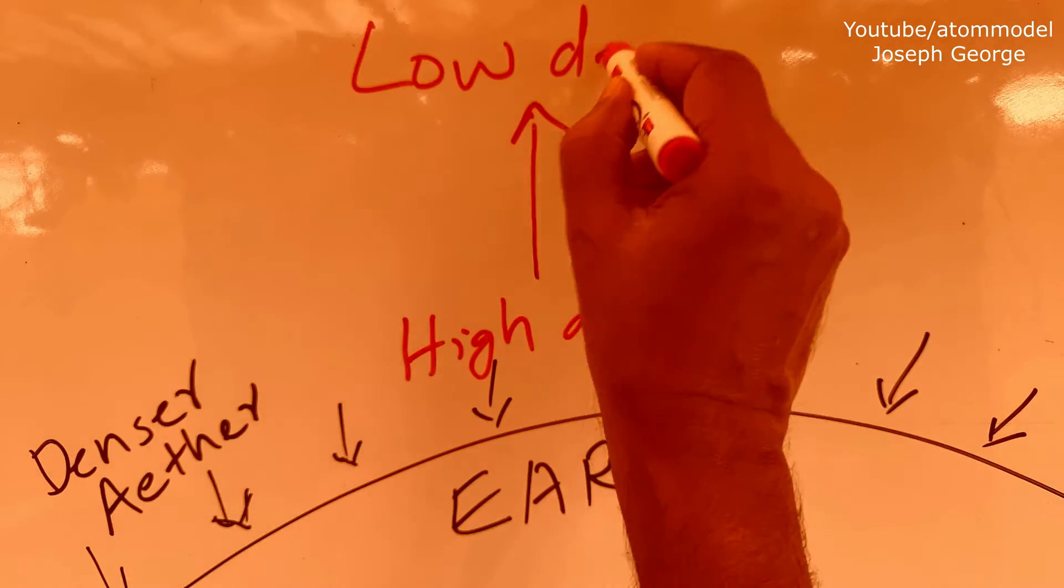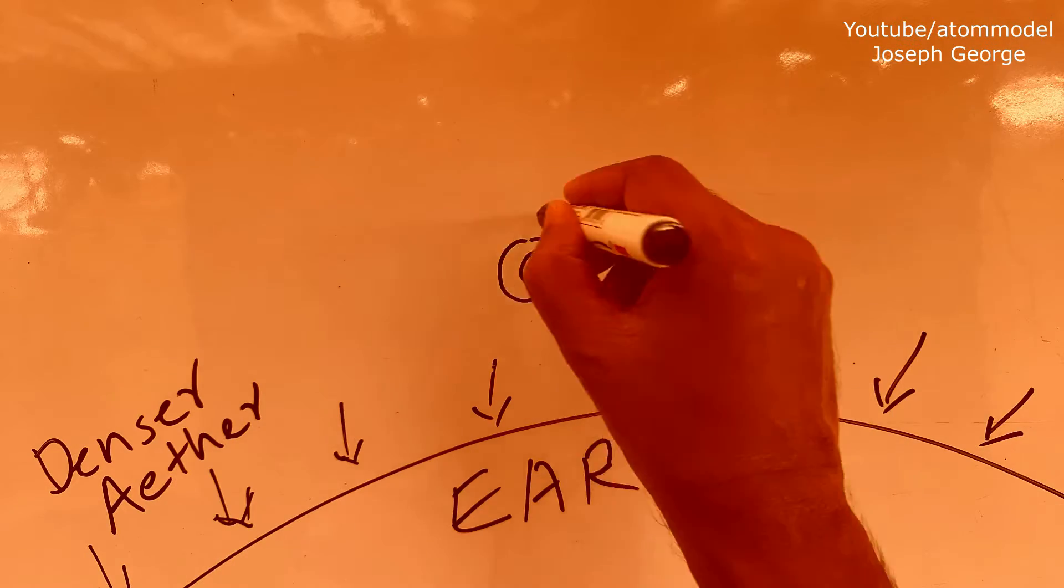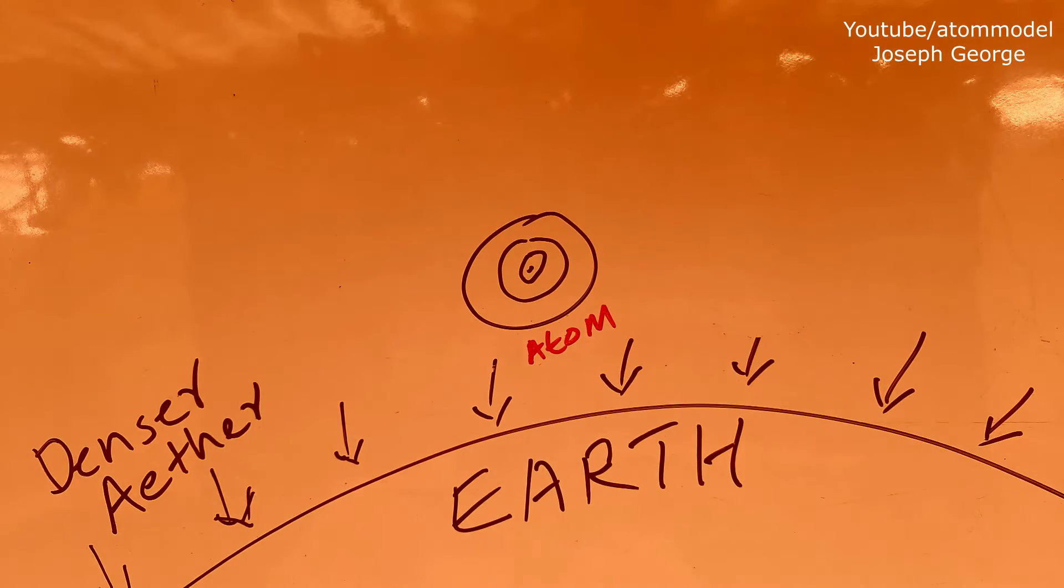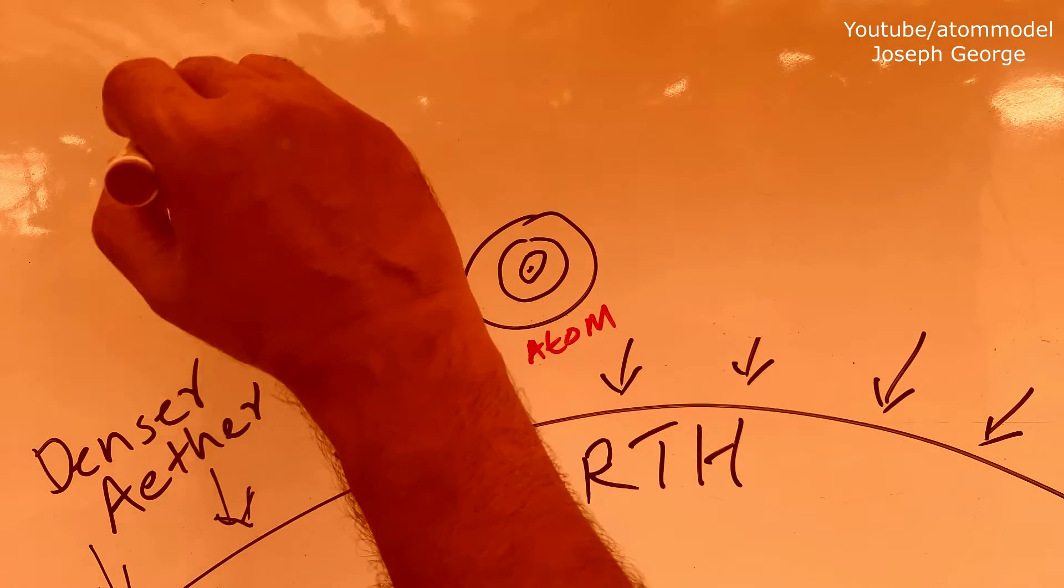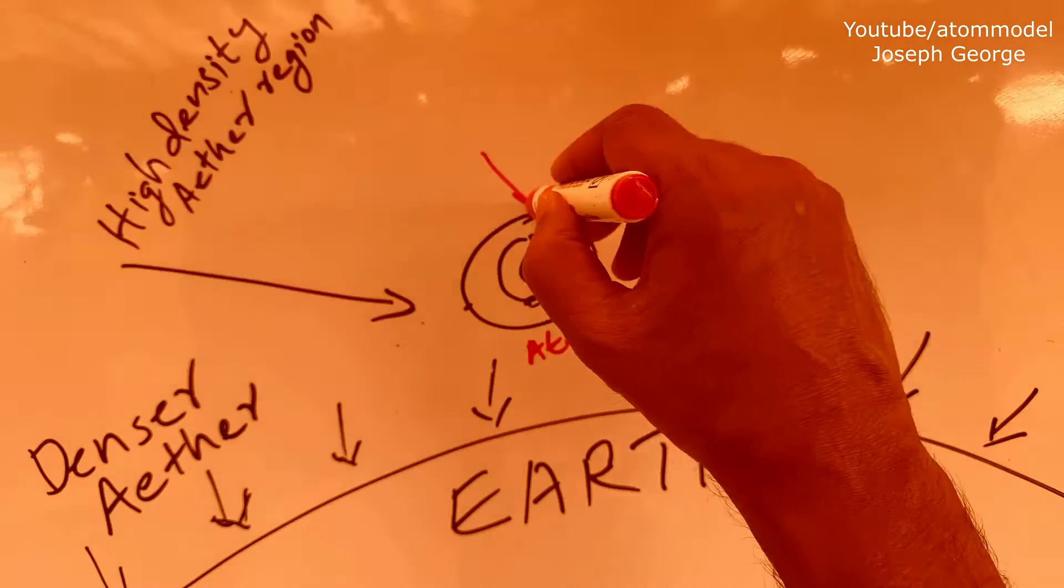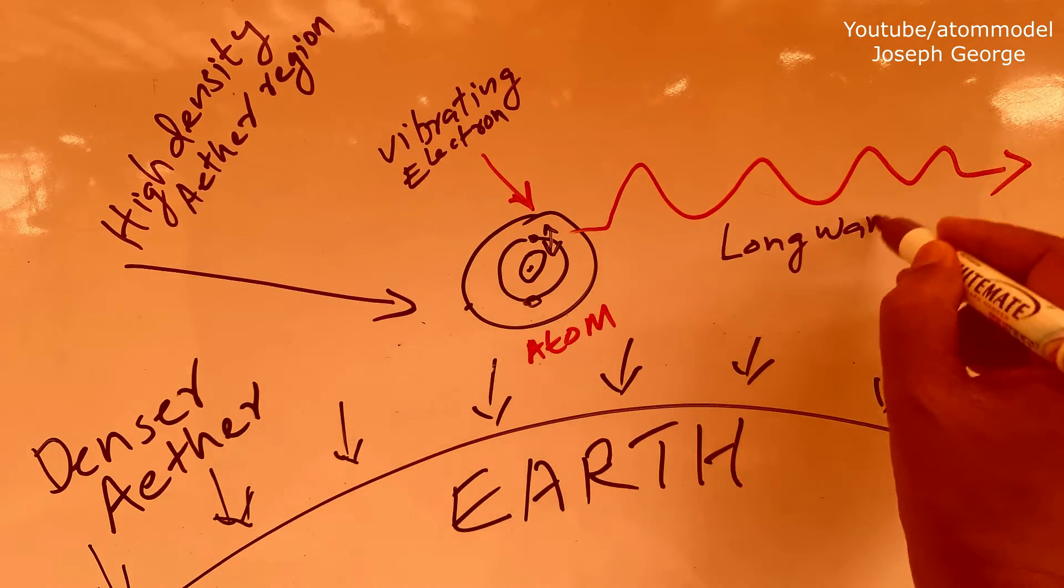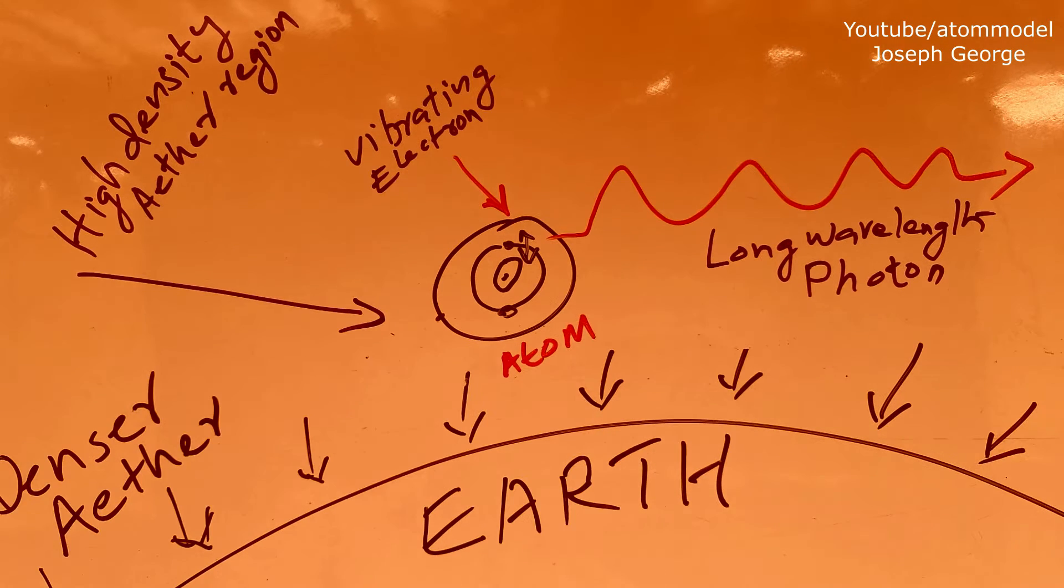Ether density has an effect on an excited electron in an atom. If an atom is situated in a denser ether region and if the electrons in it are excited, because of the friction exerted by high-density ether, the electrons will vibrate at a lower frequency and they will emit longer wavelength photons.